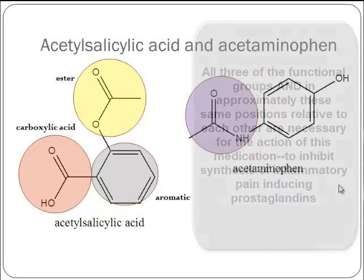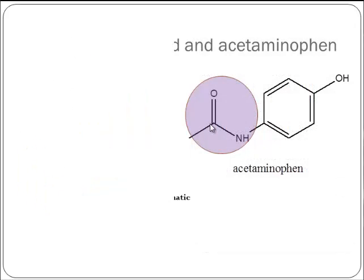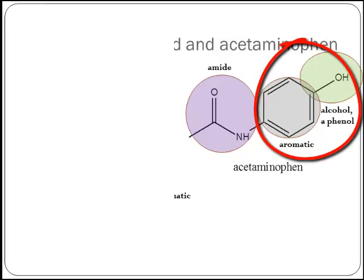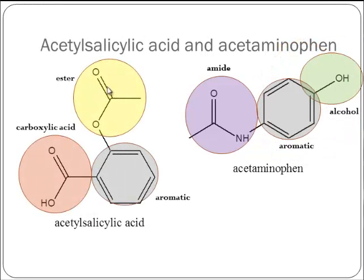How about acetaminophen? There's a group: C double bond O, single bond N — that's an amide. Then we have an aromatic, and an alcohol hanging off over here. So acetaminophen has amide, aromatic, and alcohol — and again, there's an alcohol in Tylenol that would be better classed as a phenol. Quite different from aspirin's ester, aromatic, and carboxylic acid — very different structures, very different mechanisms of action.